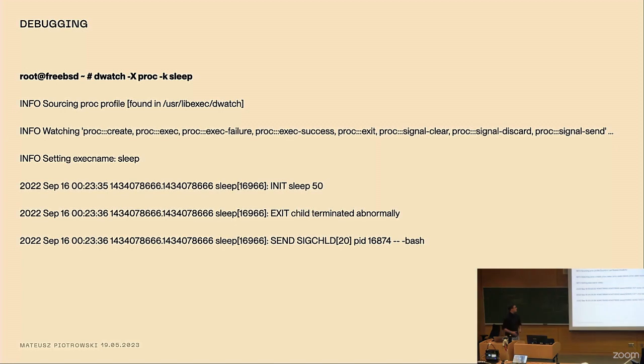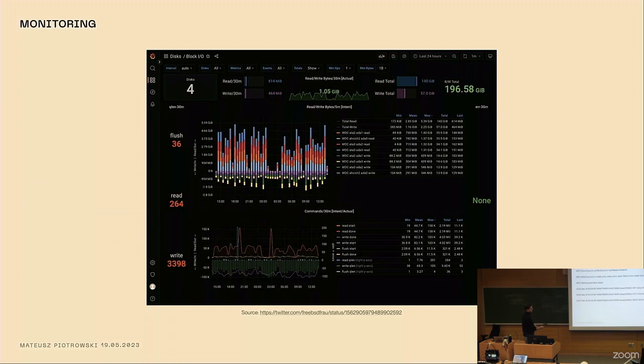For example, we can use tracers in the development and debugging of processes. In this case, we see DWATCH, a very nice wrapper around DTrace available on FreeBSD. Instead of scripting your DTrace script from scratch, you can use pre-existing profiles. Here we use a profile called PROC and filter by sleep. We can see that someone started a process called sleep for 50 seconds and then it was terminated a second later.